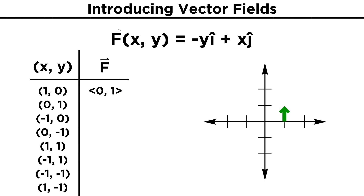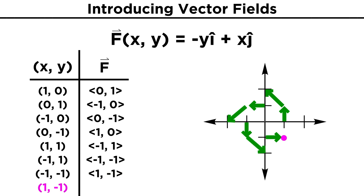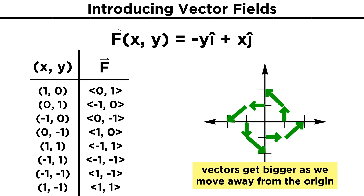We can quickly go through several more points and plot the resulting vectors as we go. For (0, 1), we get (-1, 0). For (-1, 0), we get (0, -1). For (0, -1), we get (1, 0). For (1, 1), we get (-1, 1). For (-1, 1), we get (-1, -1). For (-1, -1), we get (1, -1), and for (1, -1) we get (1, 1). We are starting to see a clear circular pattern here. If we continued with more points, we would see this continue, and that vectors increase in size as we move away from the origin. This is the general approach that can be used when wanting to see what a vector field looks like. We can't plot out the vectors at all the infinite points of the coordinate system, but we can see the general trend quite quickly.